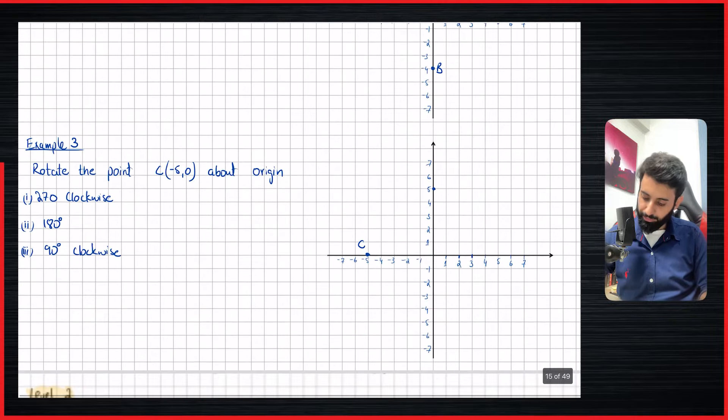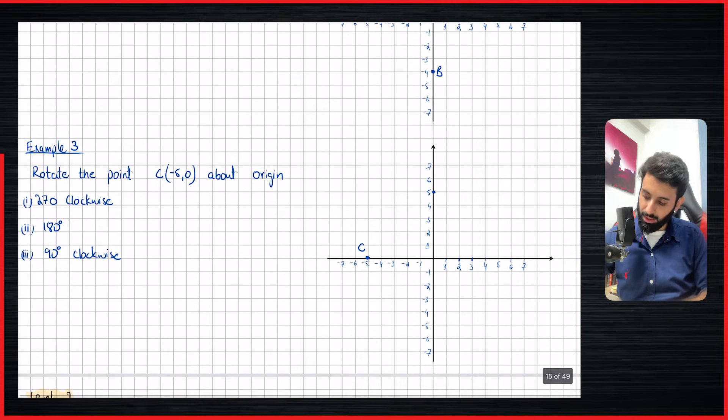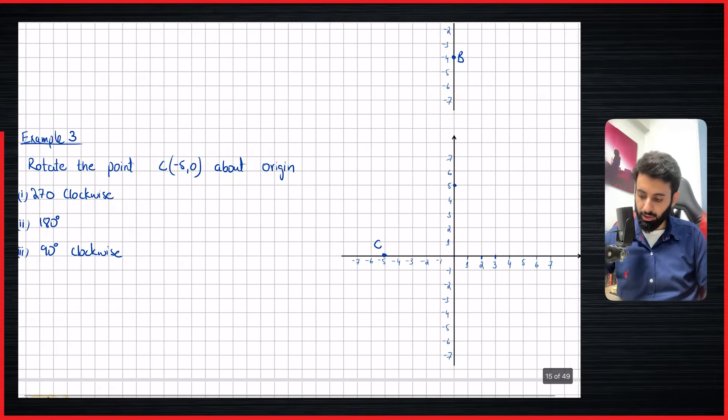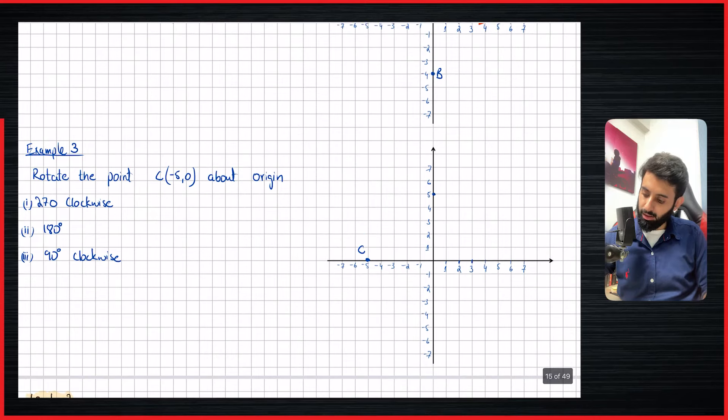I encourage you to solve example number three yourself — you can take a screenshot, perform the rotation, and leave your answer in the comment section, and I'll check whether it's correct. In the next video we'll be doing level two of rotation, where the center will again be the origin, but unlike these examples, the point won't be in line horizontally or vertically with the center. See you in the next video — take care, bye bye.